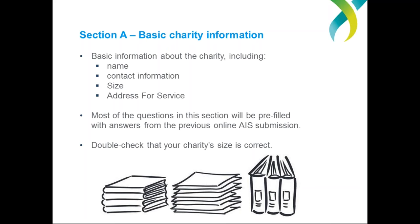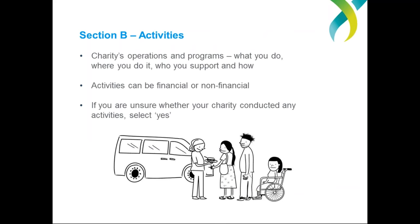On to Section B: Activities. This section poses questions about your charity's work. You'll be asked if your charity has actually carried out any activities during the previous reporting period. Activities can be financial or non-financial. The ACNC recognises that activities are more than just tangible on-ground work — things like strategic planning, undertaking admin work, or even just employing staff are all activities. The aim of asking about this is to help us identify inactive charities. For all of you with us today, it's highly unlikely your charity will be inactive, so answering yes is most likely the way to go.